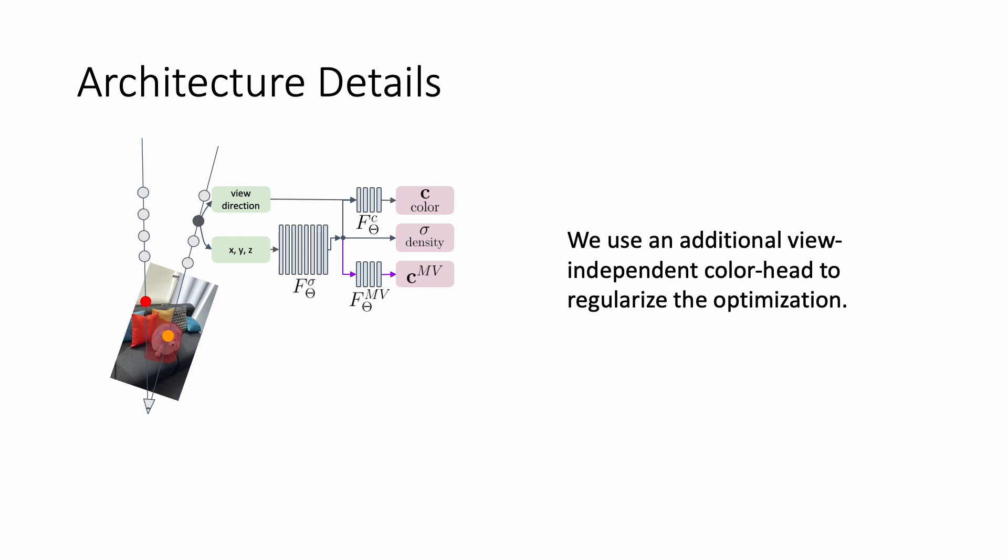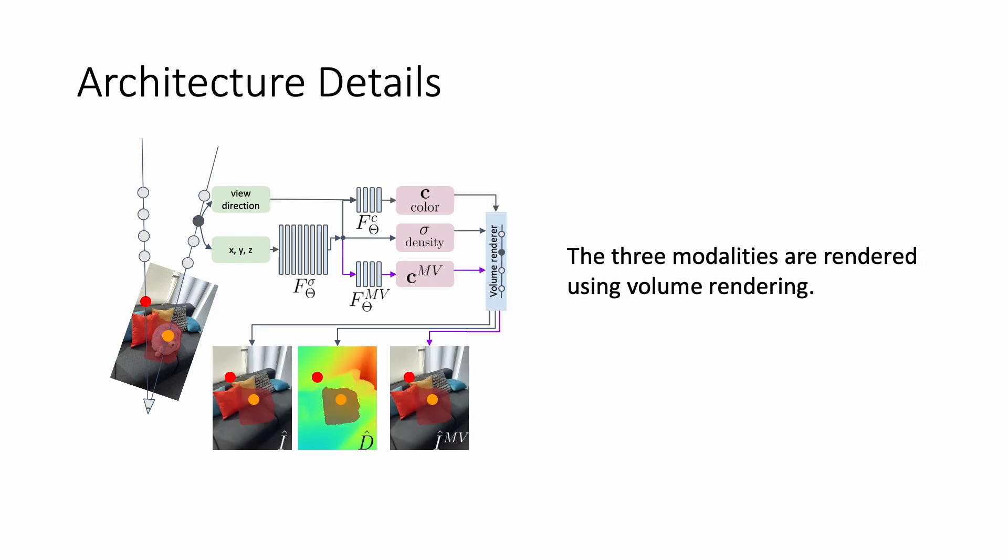Thus, we remove a degree of freedom for this head by not taking the ray direction as an input. This head is a regularization technique in our method. The output of all heads is rendered into the target view using well-known volume rendering. We produce i-hat, d-hat, and i-hat multi-view given an input camera pose.